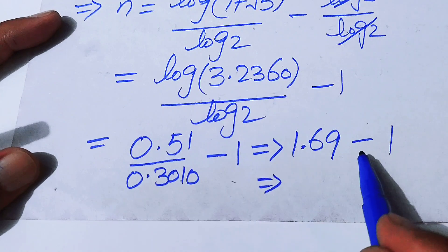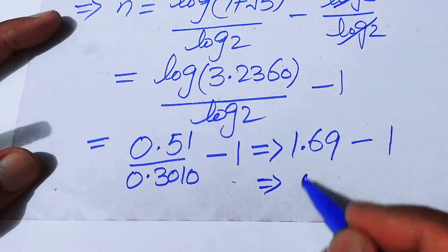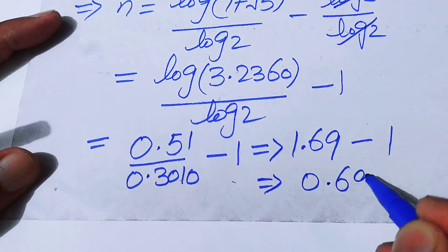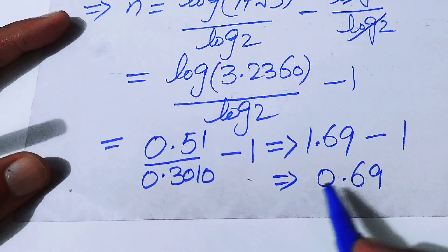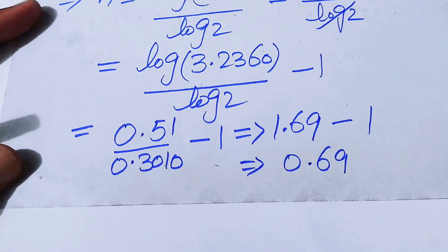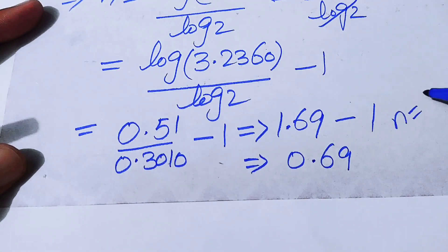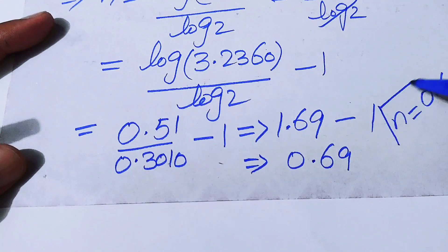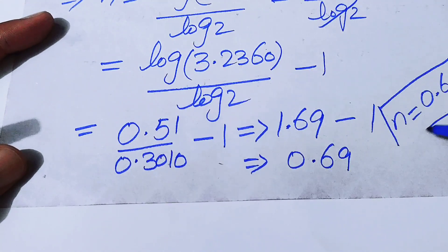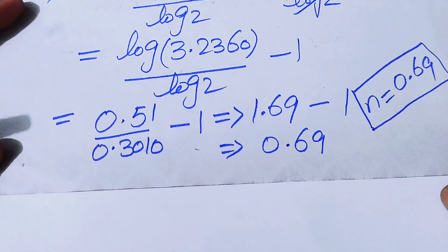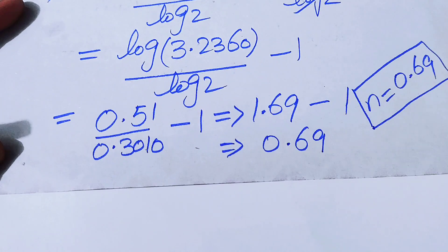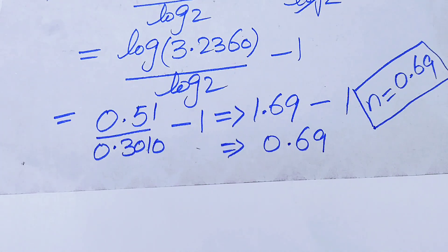So n equals approximately 0.69 is the final value for this given equation, and this is our final answer. Thank you so much for watching this video — please subscribe to my channel for more exciting videos.